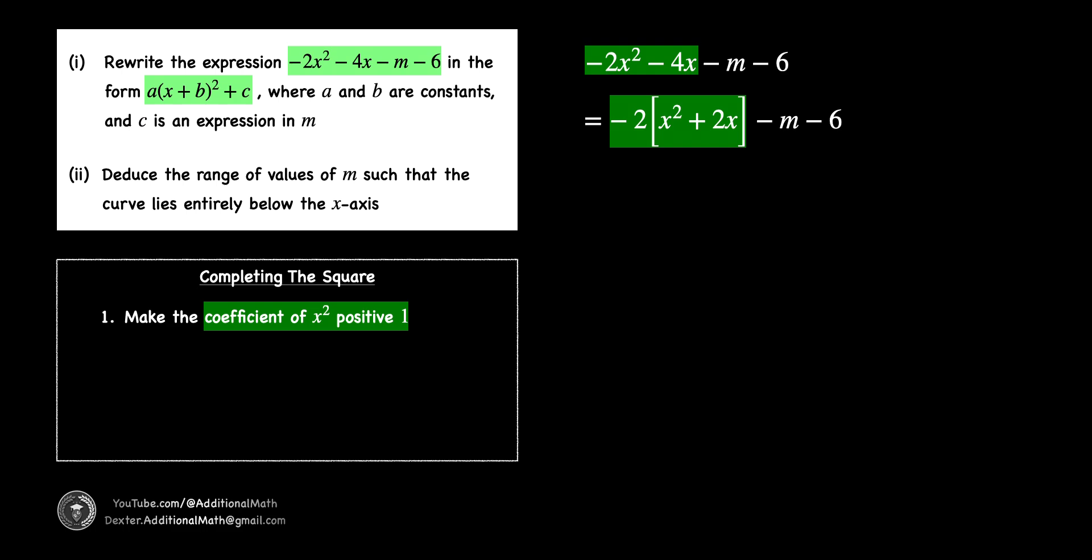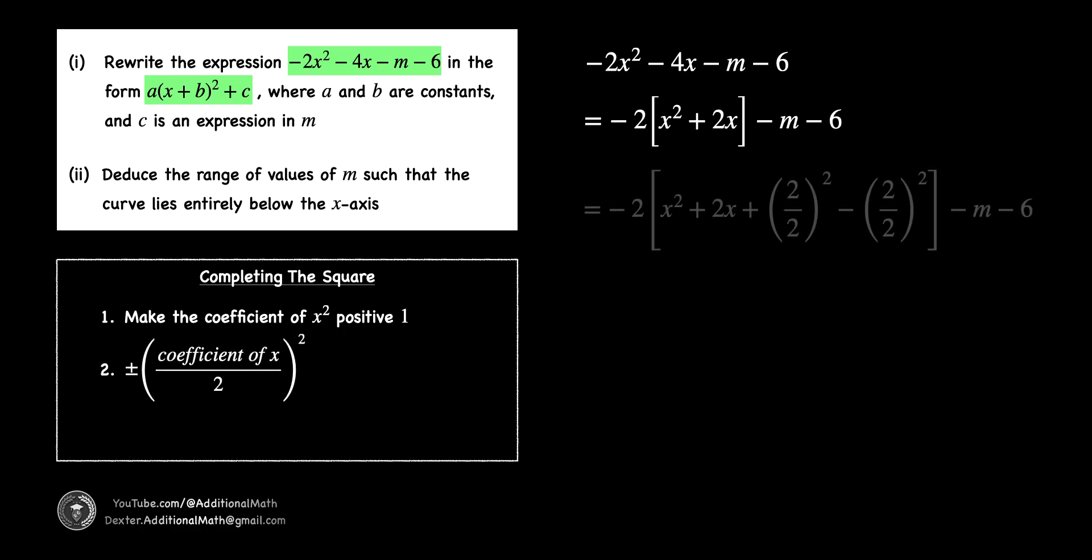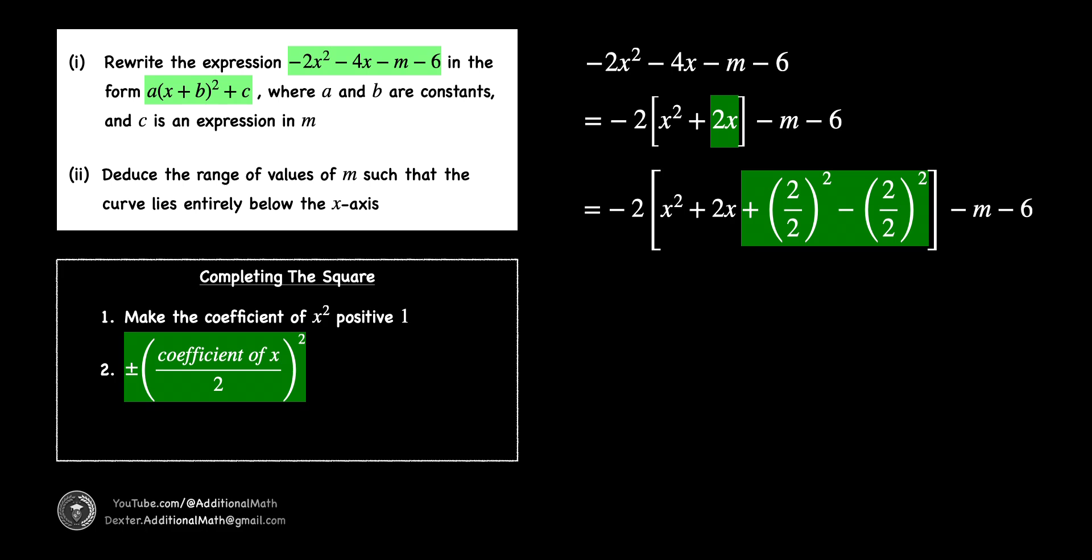From here on, we will now focus on the terms within the brackets. We will now add and subtract the square of half the coefficient of x. Half the coefficient of x is 1 and we are now plus and minus the square of 1 within the brackets.